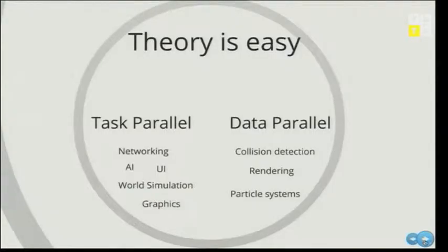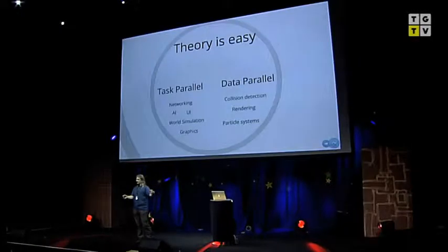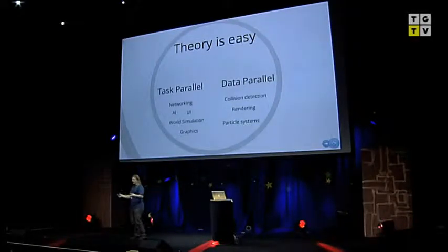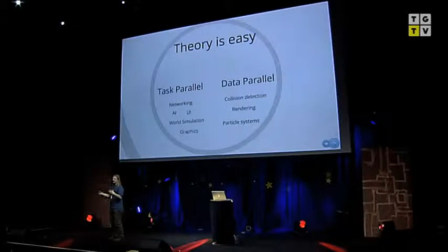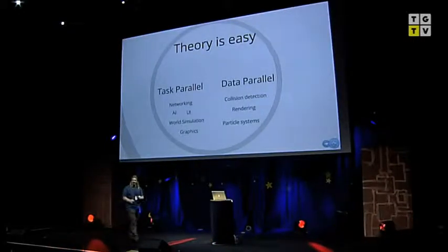In a computer game, you have things like the AI, the networking, the world simulation, the user interface — these are all different tasks. So what you do is set them up and set them running on different parts of your machine. What they need to do is communicate with each other, but it's only a little bit of communication because they're doing quite different things.